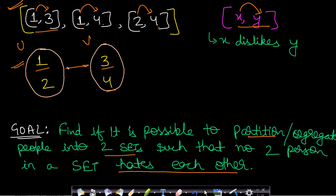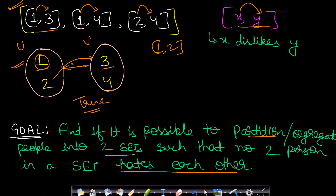When you can divide all incompatible persons into two sets, return true. But if we add an extra pair (1, 2), then 1 and 2 end up in the same set. You cannot remove 2 and put it in set V because 2 already hates 4. You also cannot take 1 and put it in set V because 1 already hates 3 and 4. Therefore it is not possible to put 1 and 2 into different sets, so you return false.